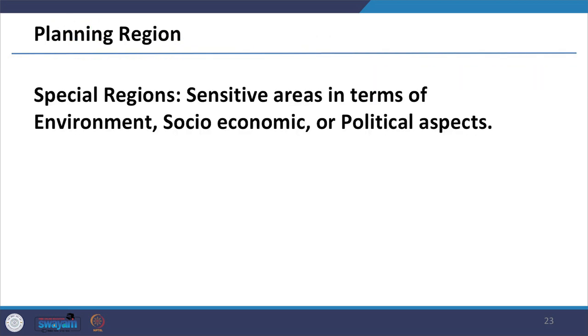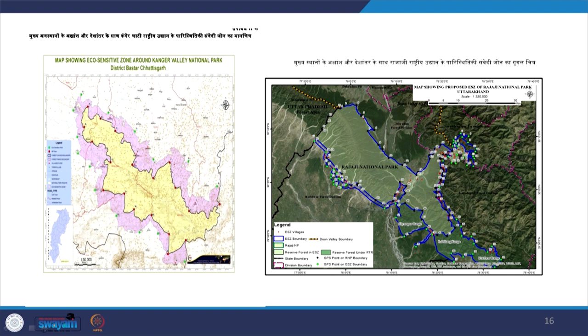Coming to the special regions, they are sensitive in terms of environment, socio-economic or political aspects. We see the example of the eco-sensitive zone around Kanger Valley National Park located in the district of Bastar in Chhattisgarh. We can also see Rajaji National Park, whose boundary is specially identified based on environmental consideration. This is the way sensitive zones are identified.